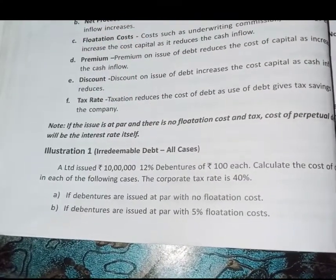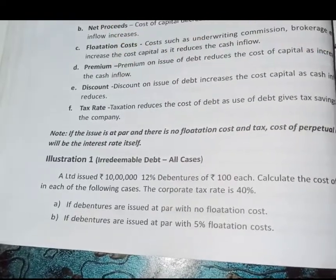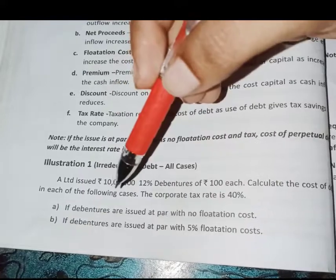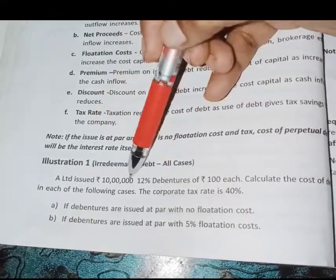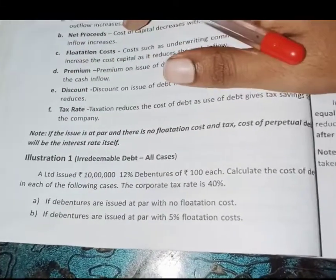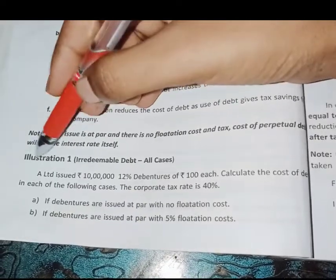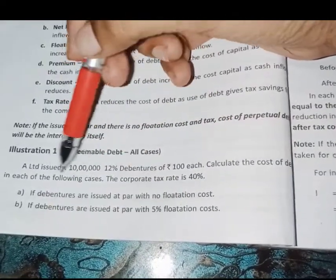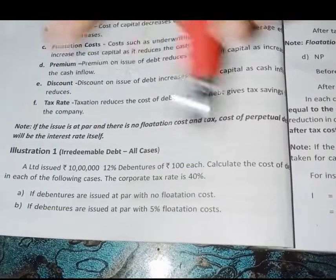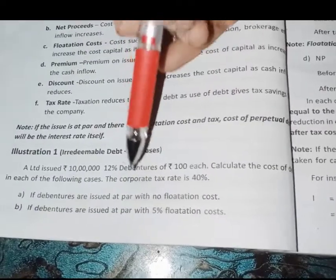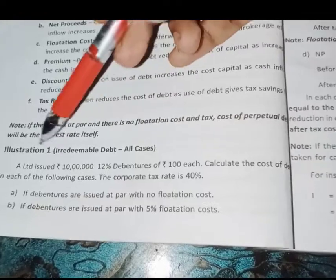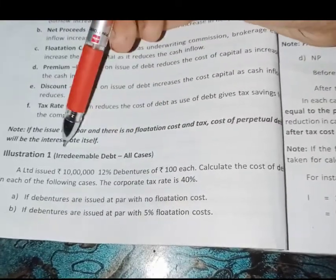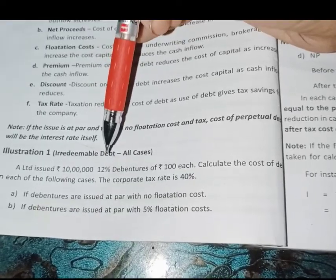This is a problem. We do examine and ask questions about it. We have to ask two questions: what are redeemable and irredeemable debt? We need to identify which type it is. If the question does not specify a redemption period of, say, 10 years, then it is irredeemable debt.